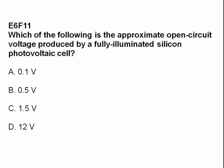Which of the following is the approximate open circuit voltage produced by a fully illuminated silicon photovoltaic cell? Answer B, 0.5 volts.